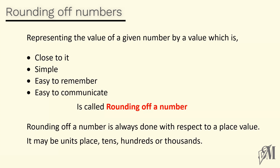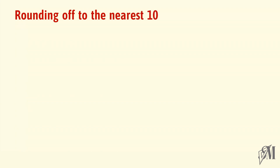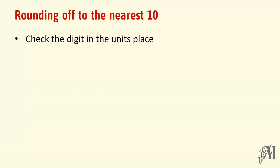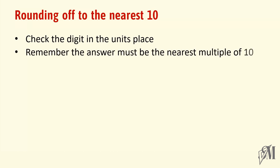Rounding off is done in different ways. Let's look into them now. Rounding off to the nearest ten: when a question is given, what you should do is check the digit in the units place, and remember the answer must be the nearest multiple of ten. Let's look into some examples.